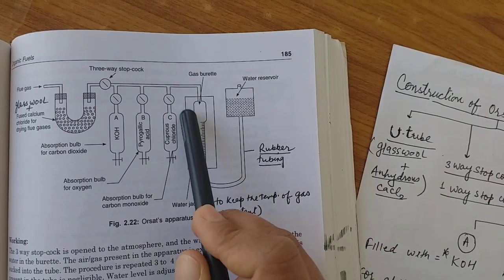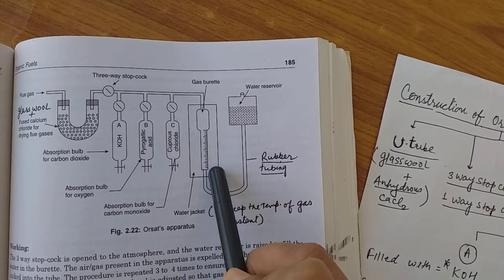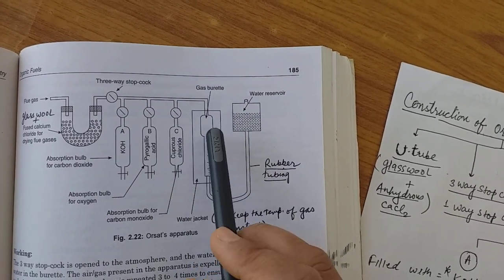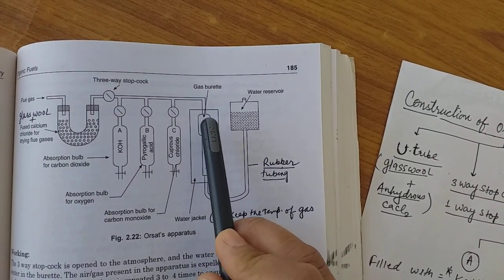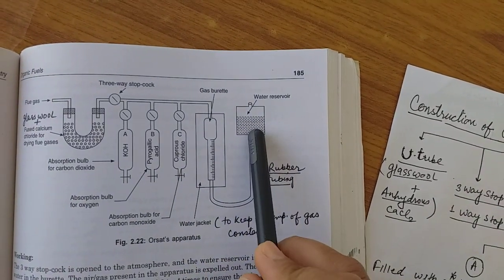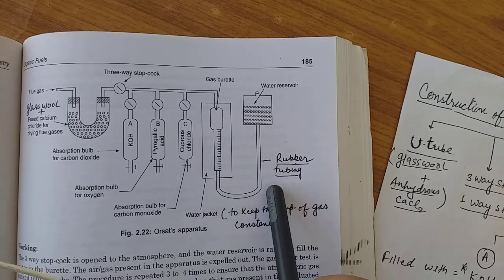Now here this is a gas burette which is surrounded by the water jacket, because gas expands with the temperature changes. Therefore, for maintaining the temperature of the gas same, there is a water jacket. This is the leveling bottle. This is about construction.